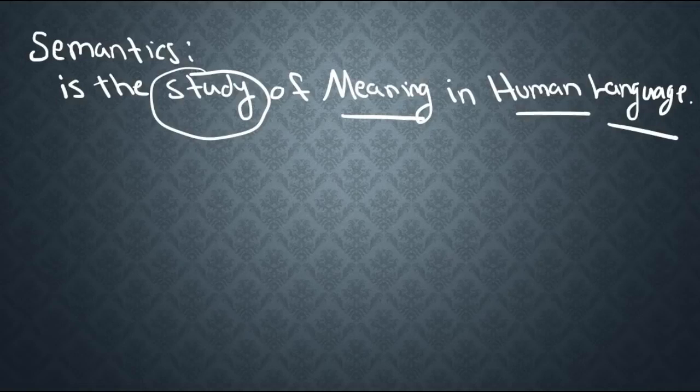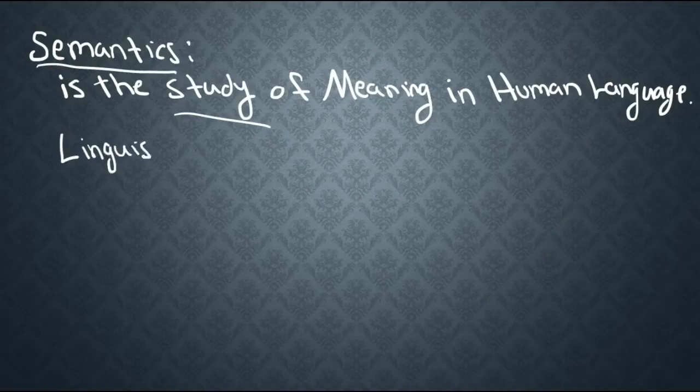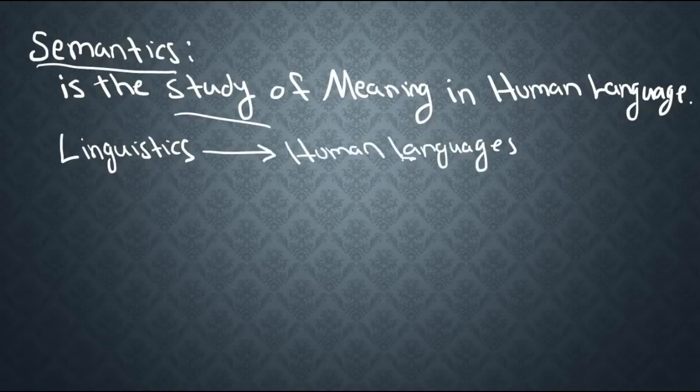What do we mean here by study? How is this a study? What branch of science is semantics a part of? So when we talk about semantics as a study, what we're really talking about is that it's part of the study of linguistics. Now linguistics is the study of human languages, and actually this should be a big L.